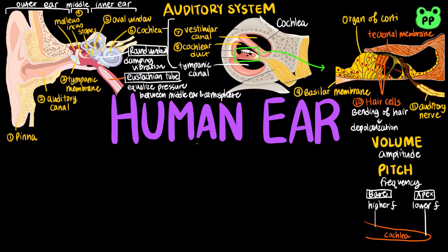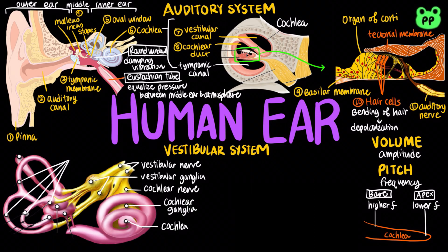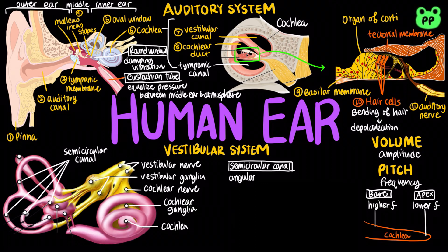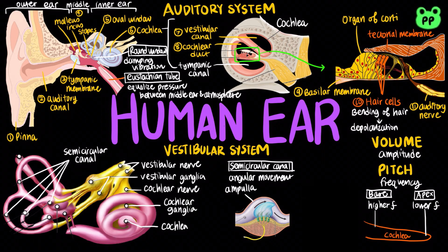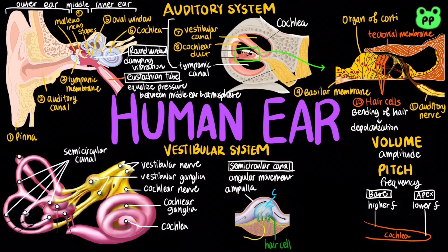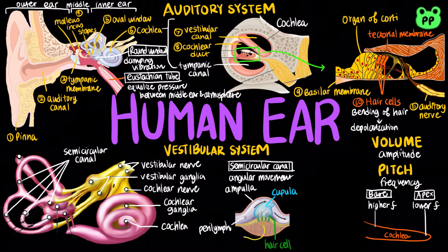The inner ear also contains the vestibular system, which detects body position and balance. The semicircular canals, arranged in three spatial planes, detect angular movements of the head. The base of each semicircular canal connects to an enlarged region known as the ampulla, which contains hair cells that project into a gelatinous cap called the cupula. When the head starts or stops rotating, the fluid known as perilymph in the semicircular canals presses against the cupula, bending the hairs, which increases the frequency of action potentials in the sensory neurons directly proportional to the amount of rotational acceleration.